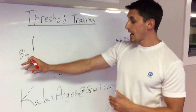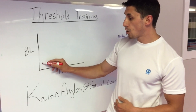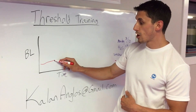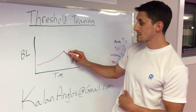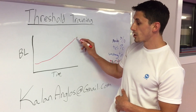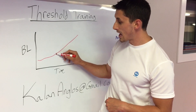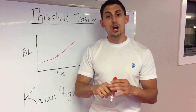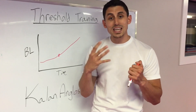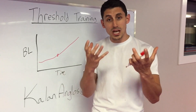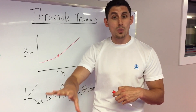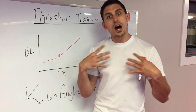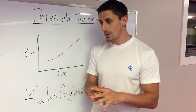So if we plot blood lactate over time as training gets harder and harder, it builds up and up. There's a certain point where the anaerobic threshold is — that's where lactic acid is building up in our muscles and we're not clearing it away. That's a problem because it's going to affect our performance.